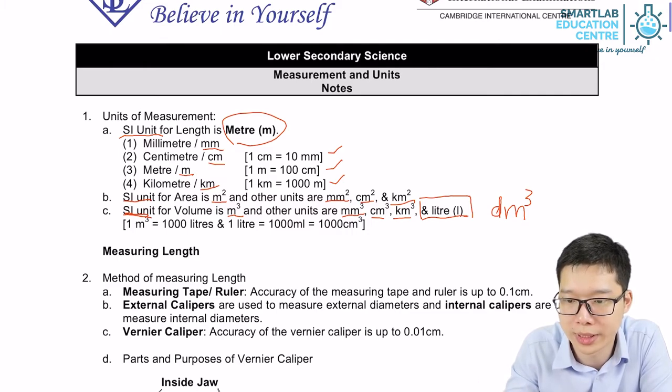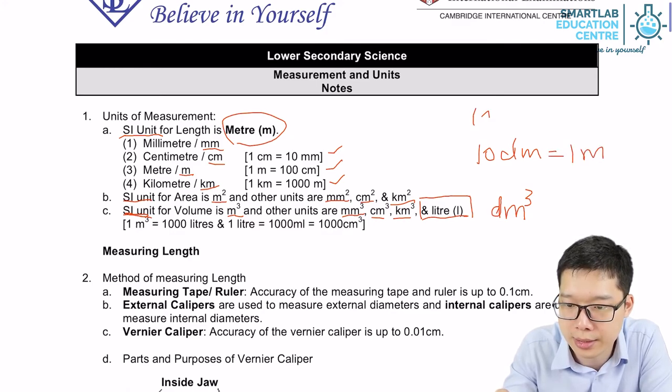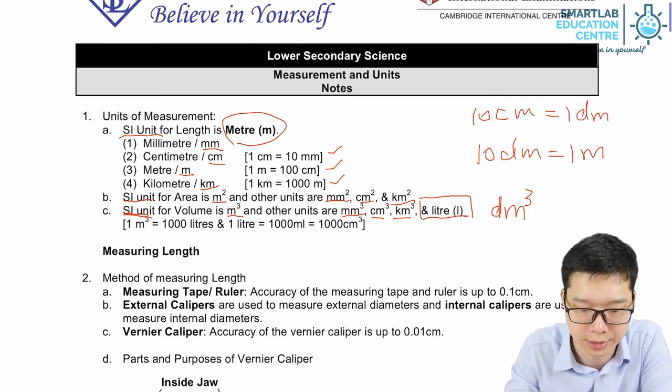For those who don't know what dm is, 10 dm equals to 1 meter. 10 cm equals to 1 dm. So that's the relationship.